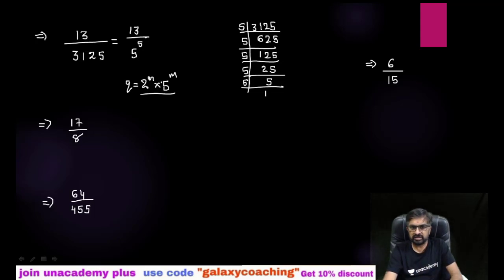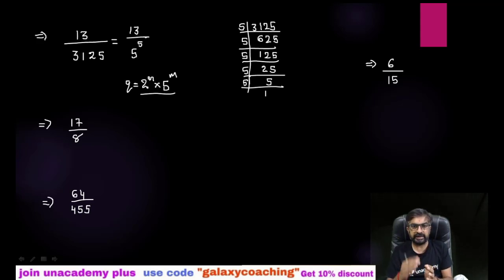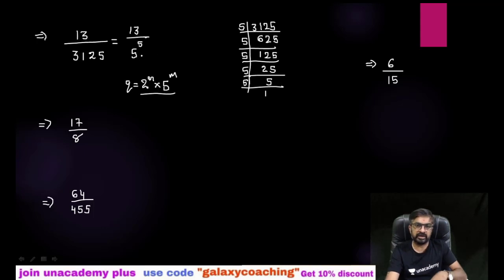Here the denominator 3125 is in the form of 5 raised to 5, which means 5 raised to M — and you can write 2 raised to the power 0. If you are getting only 5, only 2, or both 2 and 5 as factors, then the answer will be terminating.